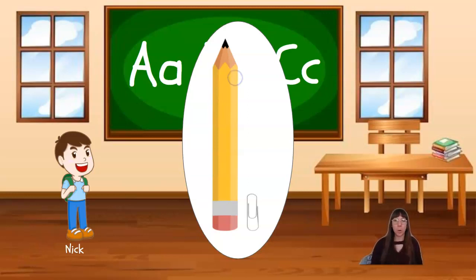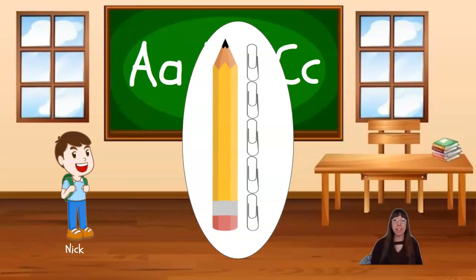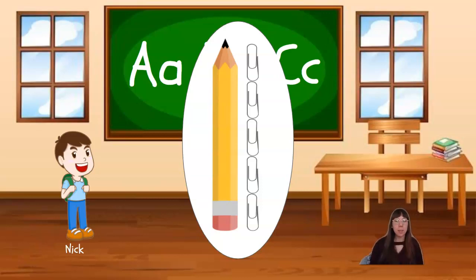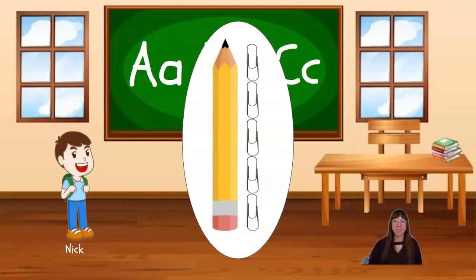One, two, three, four, five. This pencil is about five paperclips tall. It's important to note that when we're doing non-standard measurement, sometimes we have to estimate, or make our closest guess to how tall something might be. If we look really closely at the top of our pencil, we can see it goes a little bit beyond that last paperclip, but if we added another paperclip it would be too tall. So we're going to stop at five paperclips and say 'about,' to indicate that it might not be exact but it's as close as we can get. Thanks, Nick.